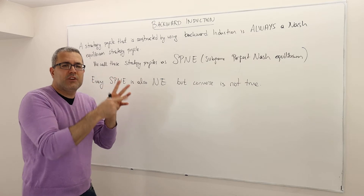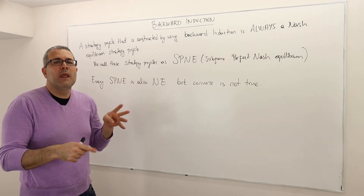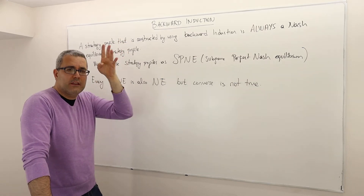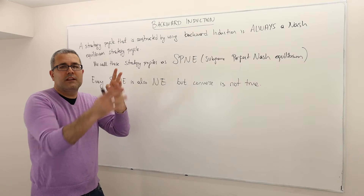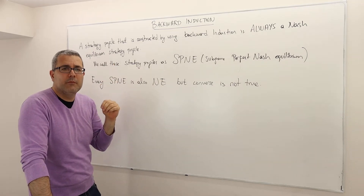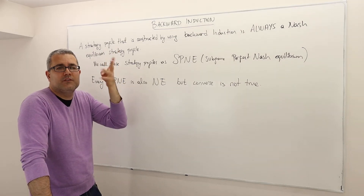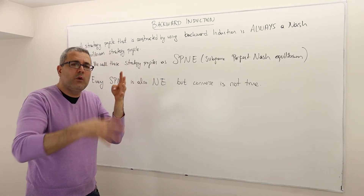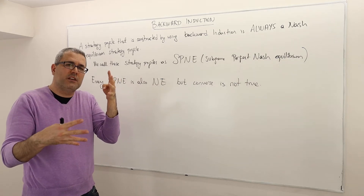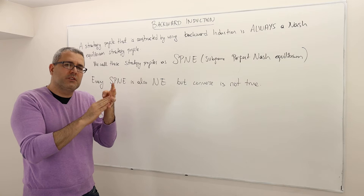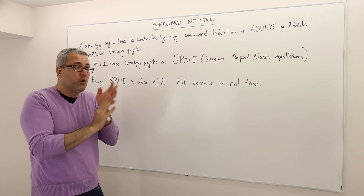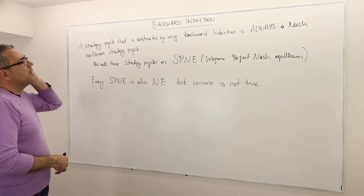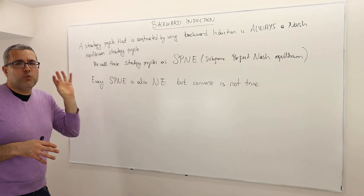For example, if you look at the first player and suppose there are four other players moving after him, his optimal strategy or payoff will depend on what those four other players do. Without knowing their optimal strategies, you cannot pinpoint what the optimal strategy for the first player will be. That's why we start from the last-moving player.